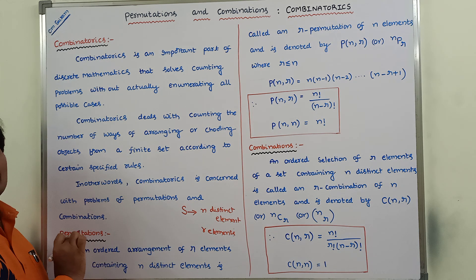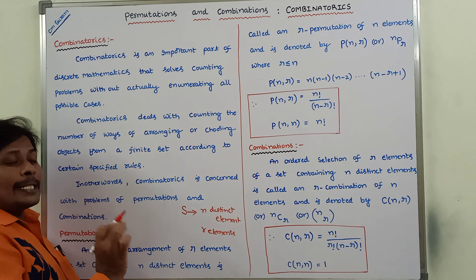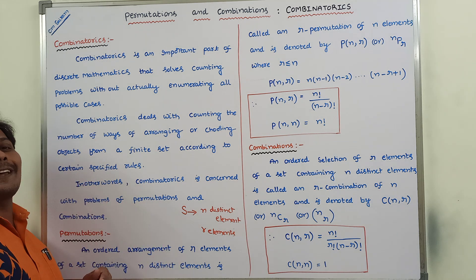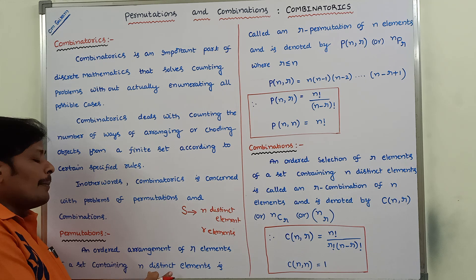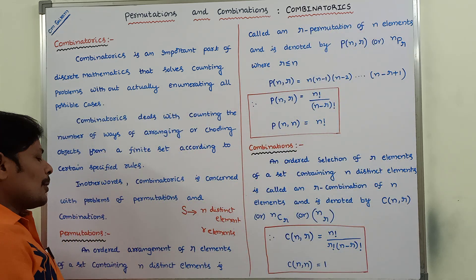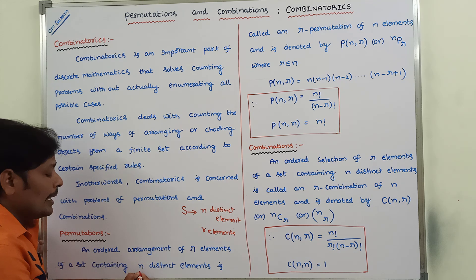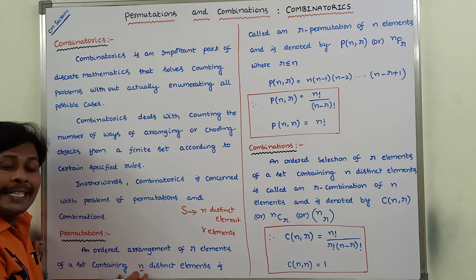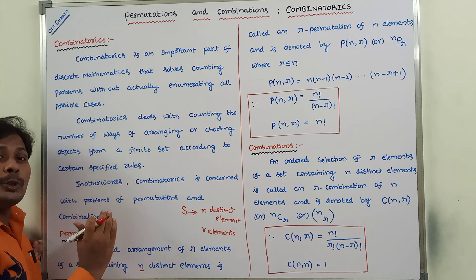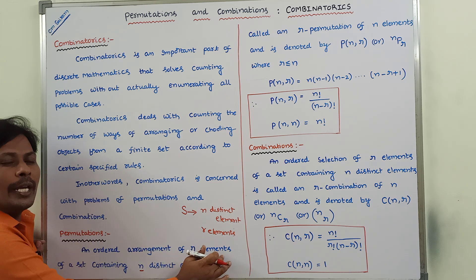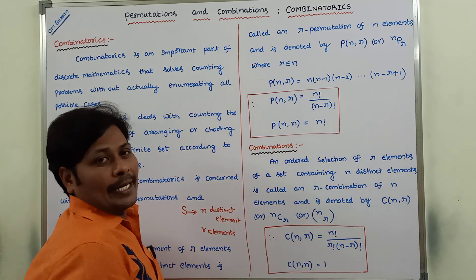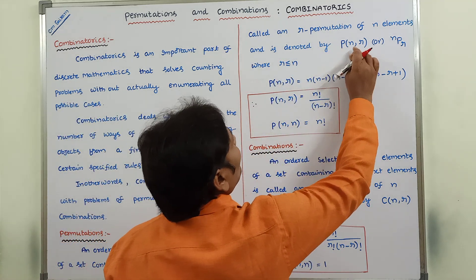Now let us discuss the definition of permutation. An ordered arrangement of R elements from a set containing N distinct elements is called an R-permutation of N elements. From the finite set containing N distinct elements, we have to arrange R objects. This is called an R-permutation of N elements.